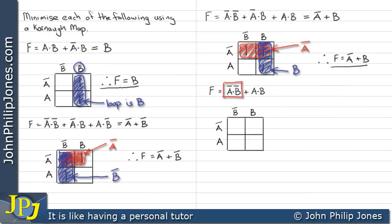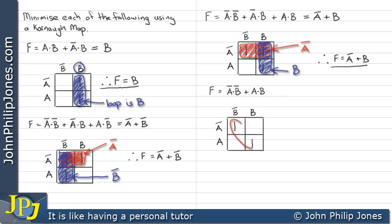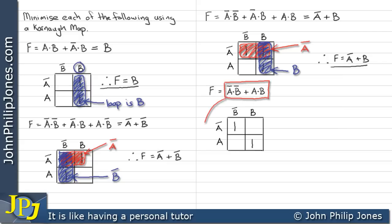For this example, we look at this minterm — not A and not B — and consequently we can plot a 1 here. For this minterm, we can see we have an A and a B, and we can plot a 1 here. Now, it may be very tempting to loop these, but because they're across a diagonal, we don't do this. We do not loop 1s on diagonals, which means that this expression does not minimise.